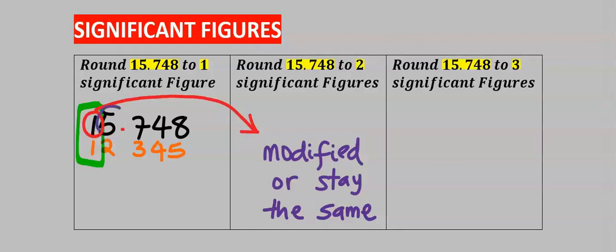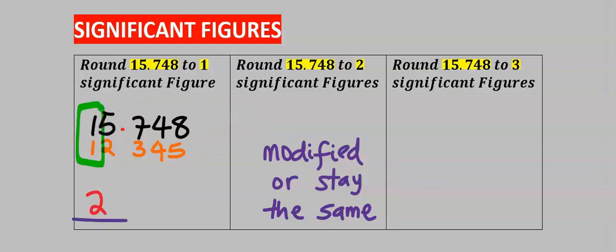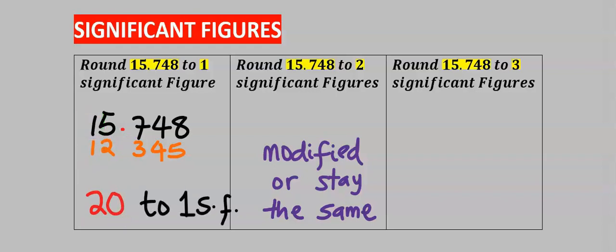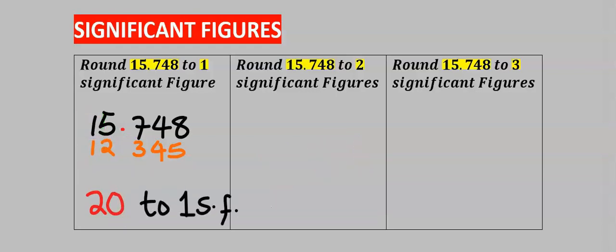5 can modify 1 to become 2. However, 2 is nowhere close to 15. Hence, this becomes 20. So 15.748 to one significant figure is 20.